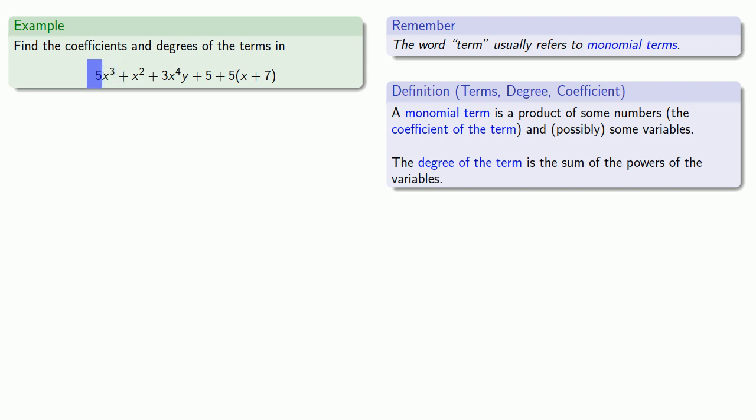...5, and some variables, x to the third. And so we can talk about the term 5x to the third with coefficient 5, the number, and degree 3, the exponent on our variable.